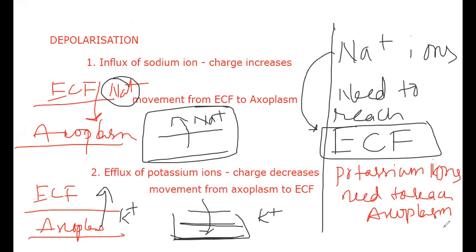Now I am reading the textbook for you, so you need to understand this language. The textbook says: sodium ions are moving outside, potassium ions are moving inside. Actually, sodium ions are present outside — during depolarization due to influx of sodium ions, charge increases, meaning sodium moved inside. So where should they go back? Outside — the home place of sodium is outside, meaning ECF. The home place of potassium is inside — the axoplasm.